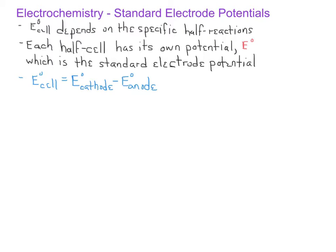Specifically, the standard cell potential is the cathode reduction potential minus the anode reduction potential.